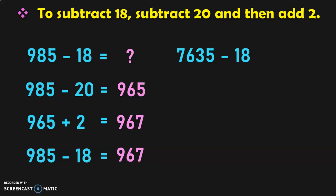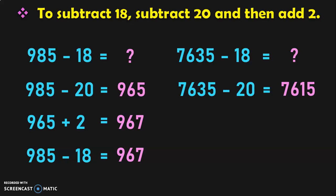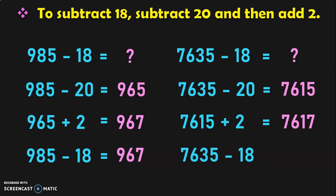Let us do for a 4-digit number. 7,635 minus 18 is equal to what? First, 7,635 minus 20 gives you 7,615. Now, 7,615 plus 2 gives you 7,617. So, 7,635 minus 18 gives you the answer 7,617.